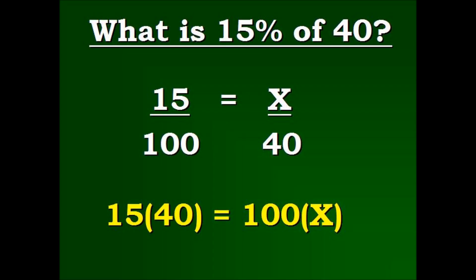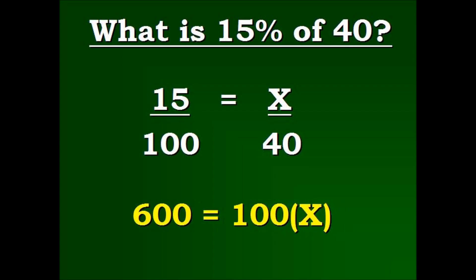Now we're going to simplify: fifteen times forty equals six hundred. Now this is the new equation that we're going to continue to keep simplifying and we're going to work from here.